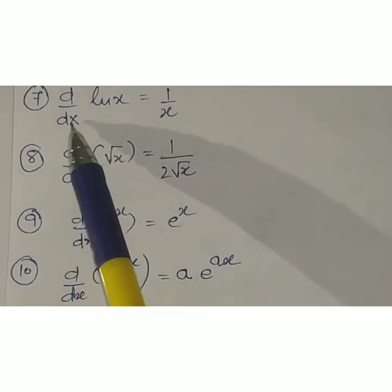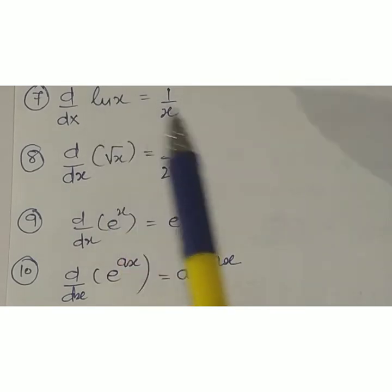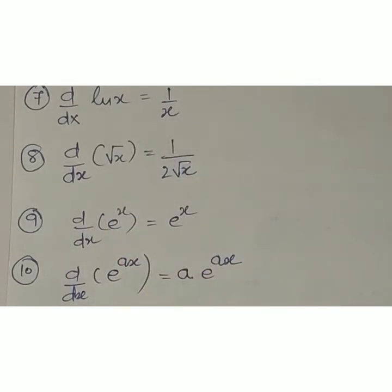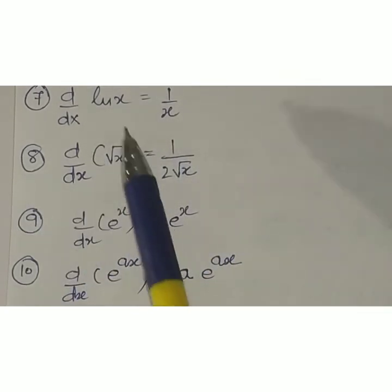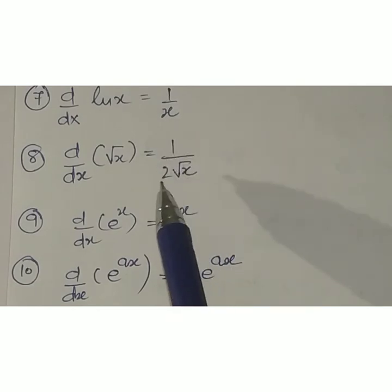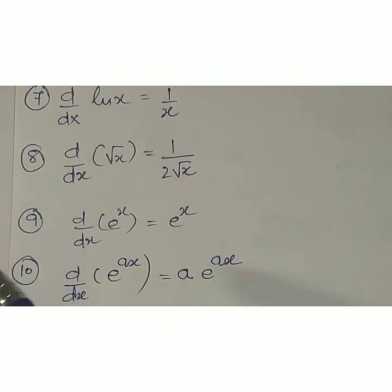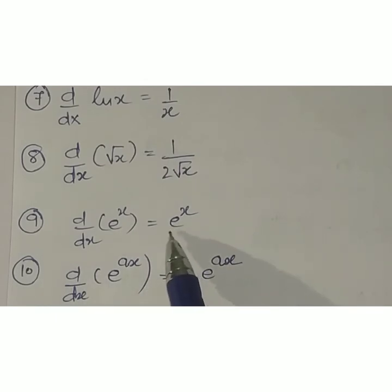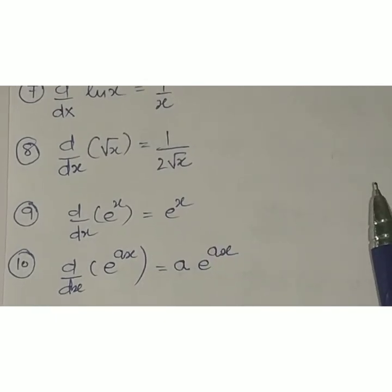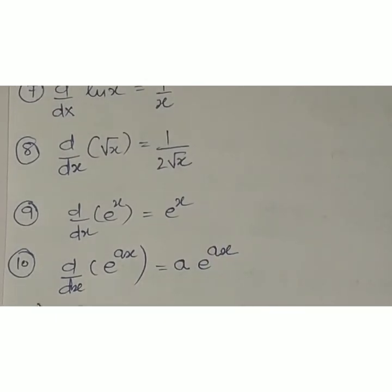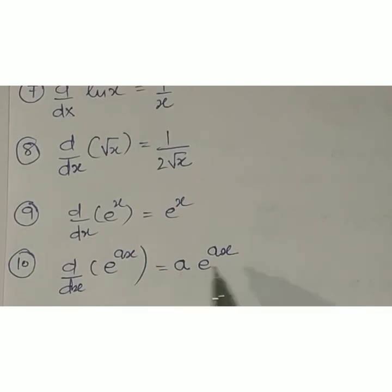d by dx of ln x gives 1 upon x. d by dx of root x gives 1 upon 2·root x. d by dx of e raised to x gives e raised to x itself. And d by dx of e raised to ax gives a·e raised to x — the constant a comes forward. This is how differentiation works for different quantities.